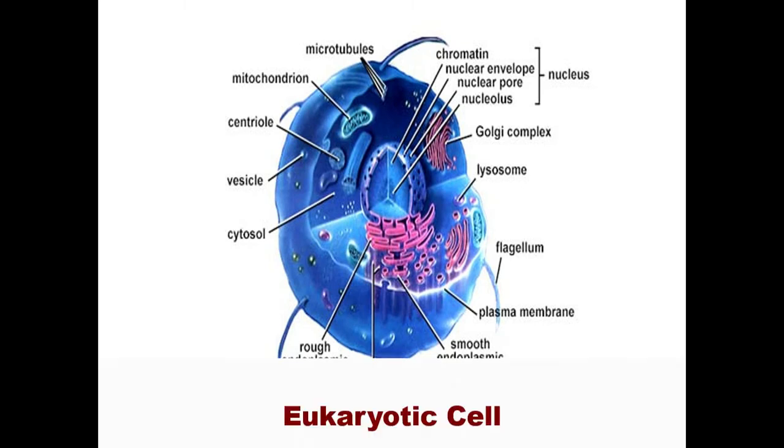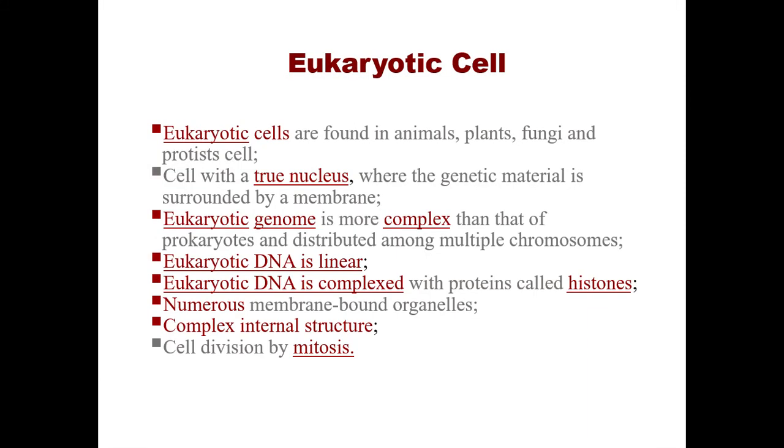Details of eukaryotic cells: they are found in animals, plants, fungi, and protists. Cells with a true nucleus where the genetic material is surrounded by a membrane.